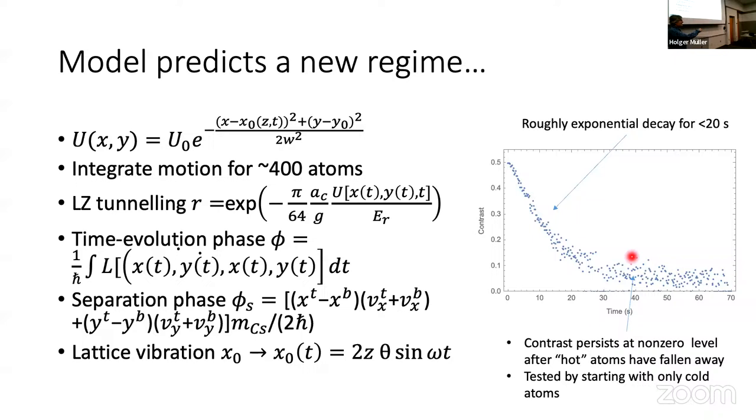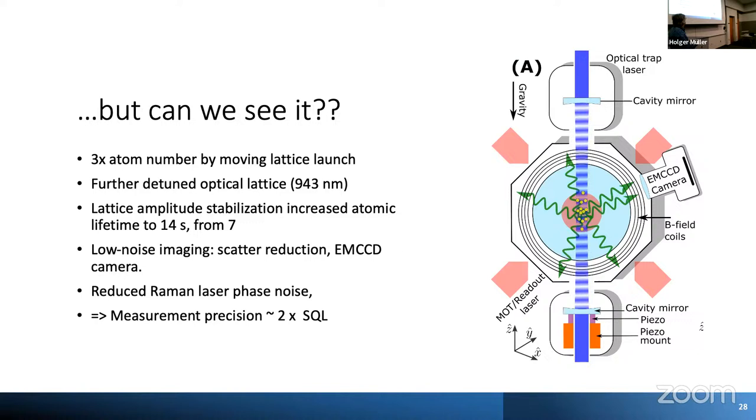In order to see this, we have to be able to reliably measure about 5% contrast. So we upgraded the experiment. We increased the atom number. We detuned the optical lattice further to reduce single photon scattering. We amplitude stabilized the optical lattice to remove parametric heating. So that's one of the parameters that influenced the atom hold time, but not the contrast decay time. We installed a fancy new camera for low noise imaging, reduced laser phase noise.